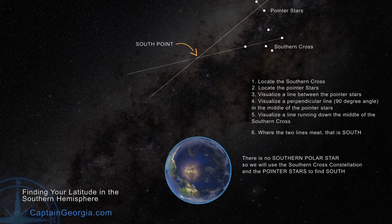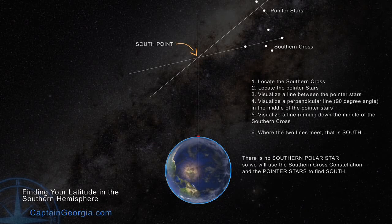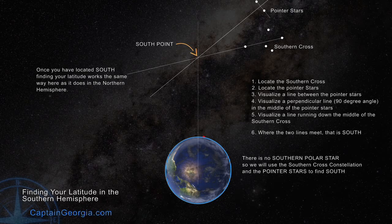Now you know where the south point is, since we don't have a Southern Polar Star. If we were on the South Pole, we would look straight up again, 90 degrees from our horizon, we would have a 90 degree angle. Therefore, we are at 90 degrees south, because we're in the Southern Hemisphere. As we move north toward the equator, those angles change.